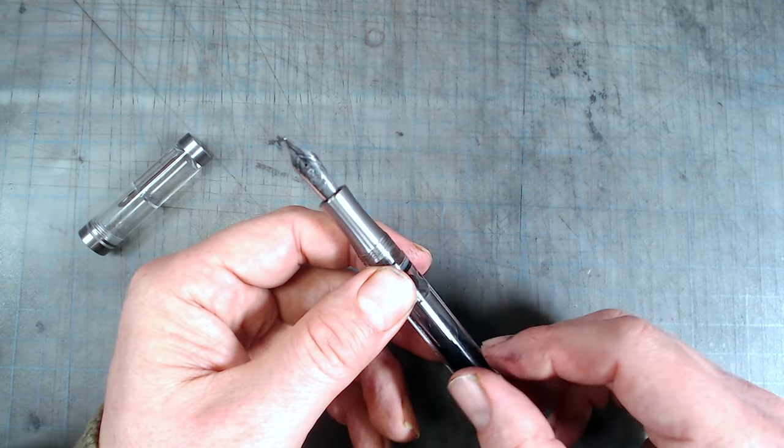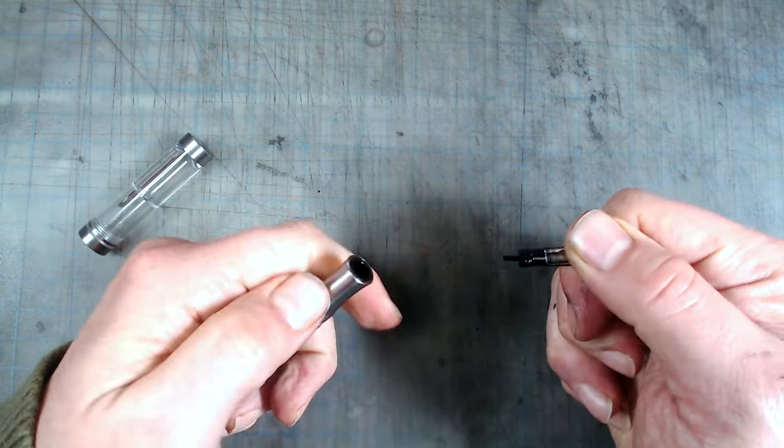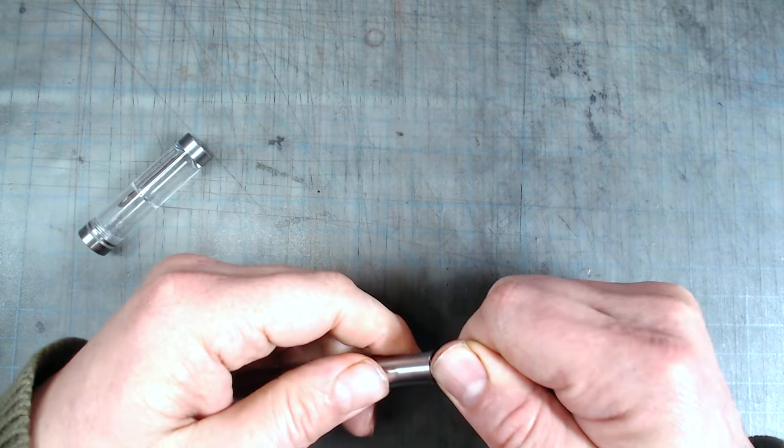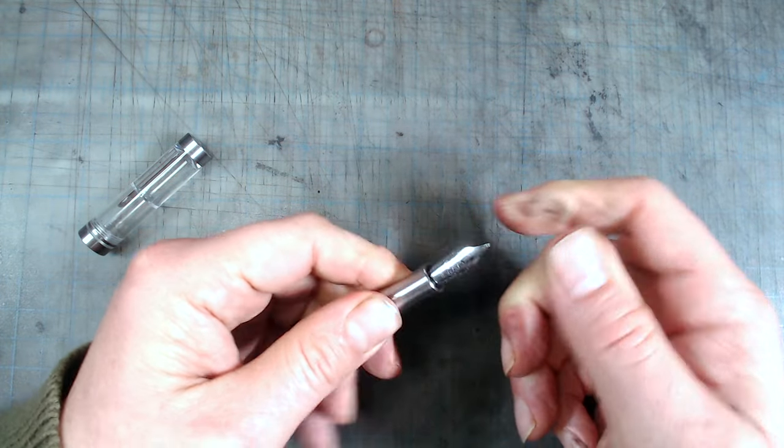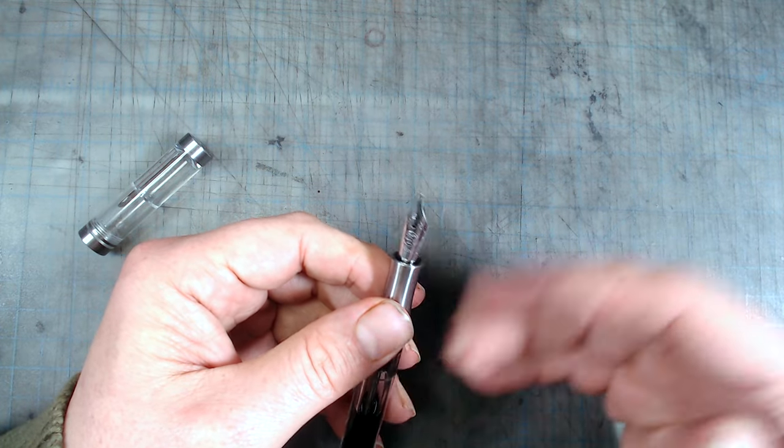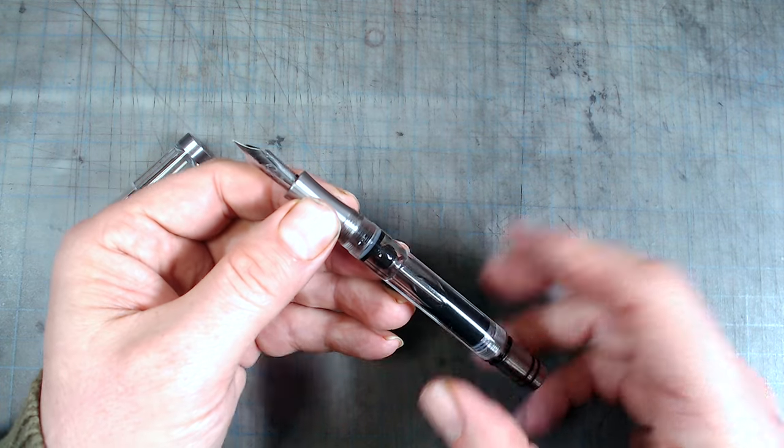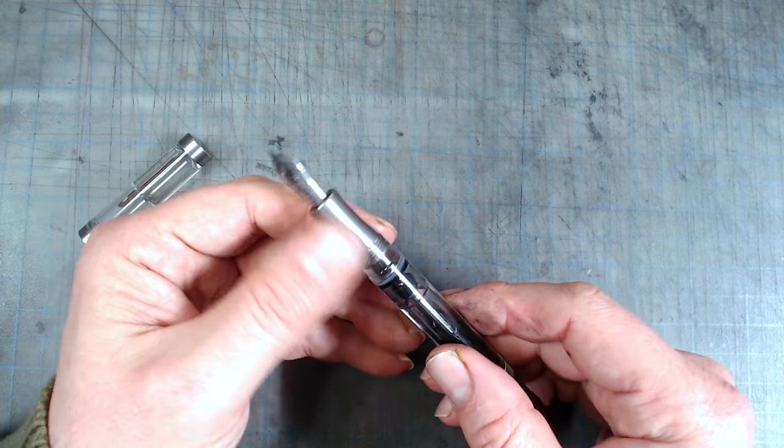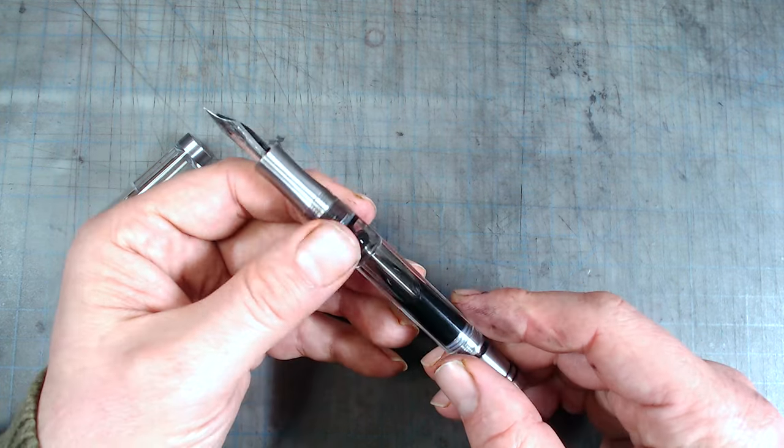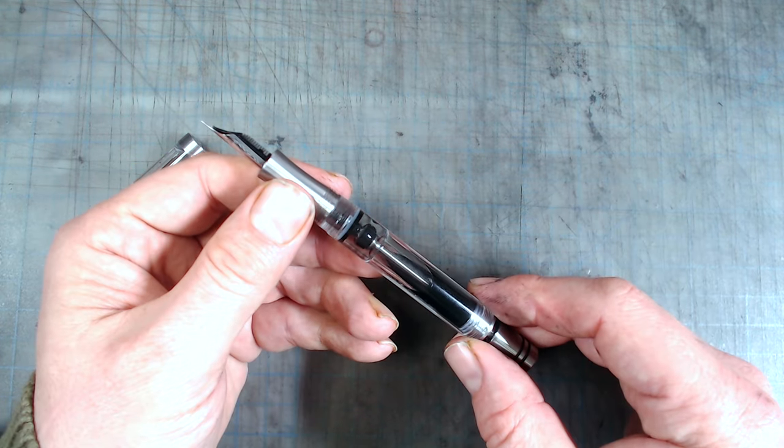Another thing that helps with ease of cleaning is that the nib and feed pull right out, instead of being in a housing unit. Not only does that make cleaning easier, it also allows you to use this pen as a nib holder, easily switching nibs in and out. For a pen in the $50 price point, the build quality here is exceptional, with smooth threading, perfect alignment of the cap rings, and lack of jiggle in the piston knob, all giving the impression of a sturdy, well-built pen.